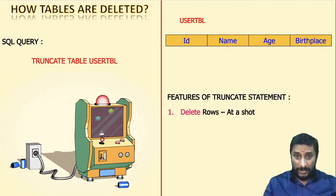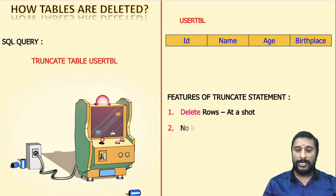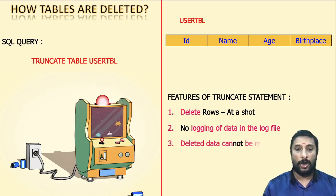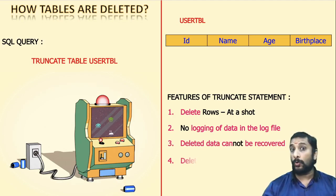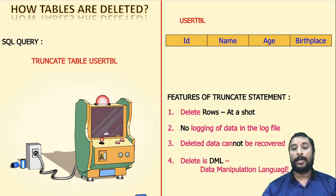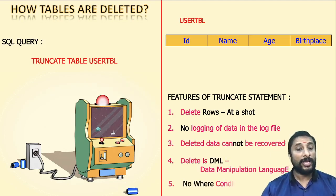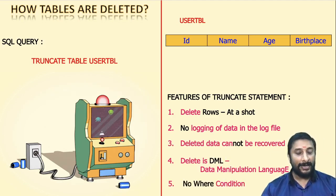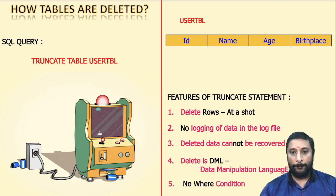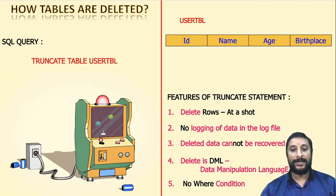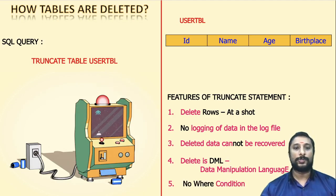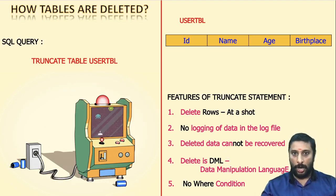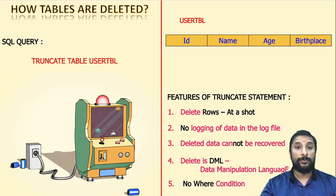So what is the difference? TRUNCATE will work all at once — it's not a one-by-one row deletion. It deletes all at once with no logging of data, so you can't recover the data. TRUNCATE is a kind of DDL processing of the data, and there is no WHERE condition to filter which data you want to delete. That's how TRUNCATE works.